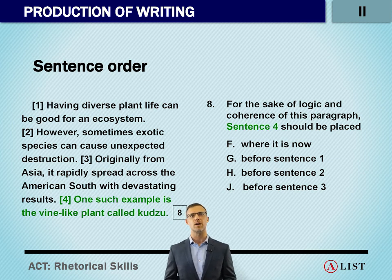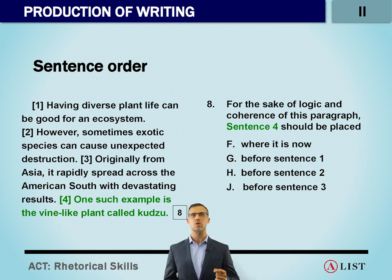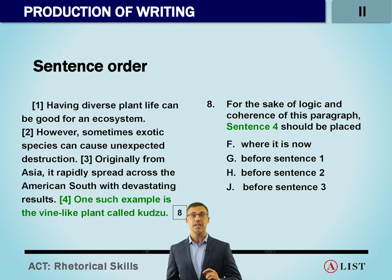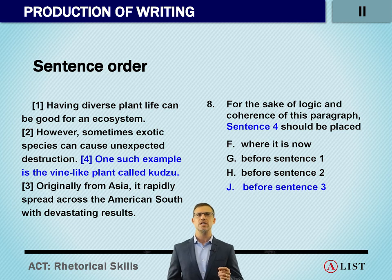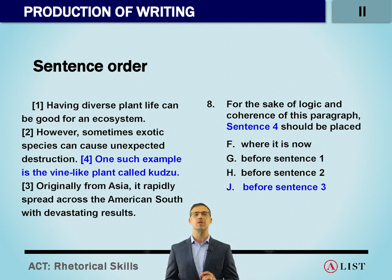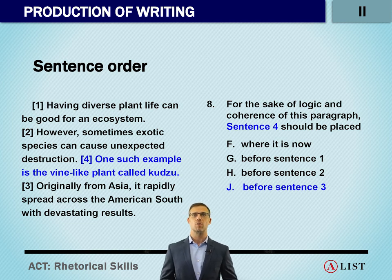In sentence four we have 'one such example is the vine-like plant called kudzu' — but one such example of what? We'd need to know what was already being discussed. Earlier, sentence two states 'exotic species can cause unexpected destruction.' Kudzu is one of those exotic species, so sentence four can come right after sentence two. But we also check sentence three: 'originally from Asia, it rapidly spread' — the 'it' refers to kudzu. So sentence four must come before sentence three to establish the antecedent. The answer is J.